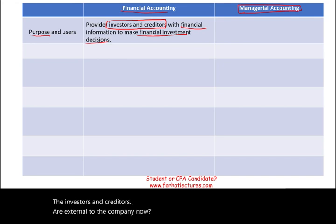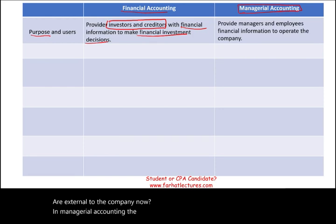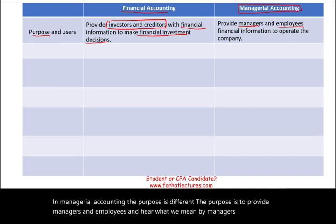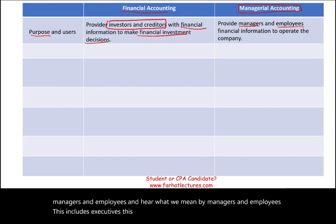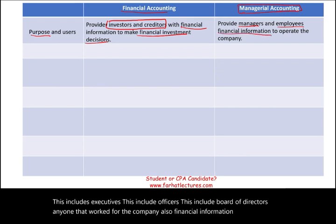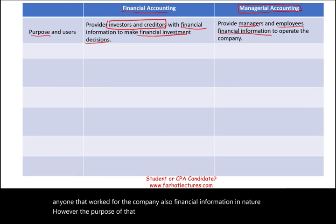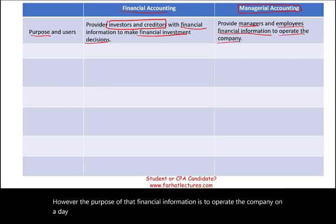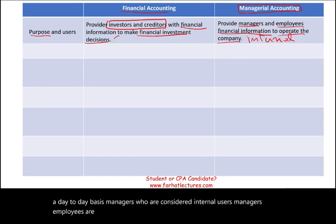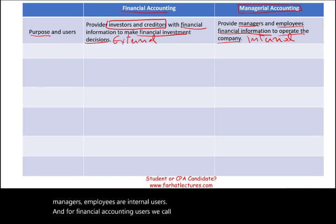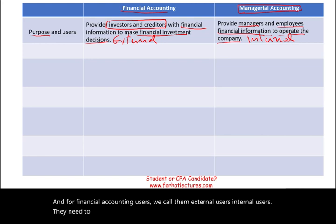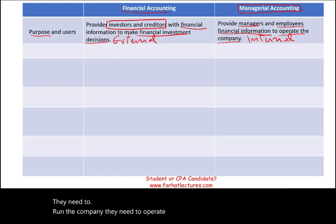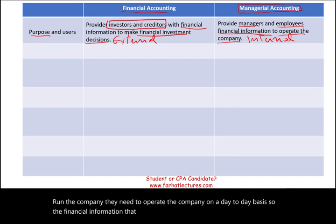In managerial accounting, the purpose is different. The purpose is to provide managers and employees — including executives, officers, board of directors, anyone that works for the company — financial information. However, the purpose of that financial information is to operate the company on a day-to-day basis. Managers and employees are considered internal users, whereas financial accounting users are called external users. Internal users need to run and operate the company on a daily basis, so the financial information they need helps them make operational decisions, not investment decisions.